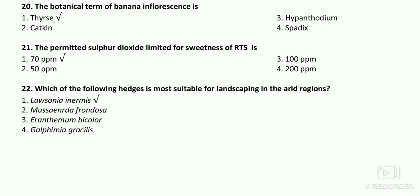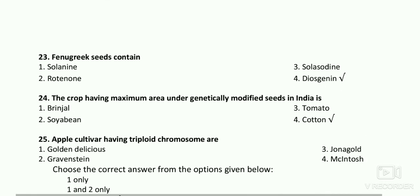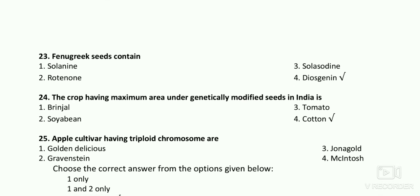Which of the following hedge is most suitable for landscape in the arid region? The answer is Lawsonia inermis. Fenugreek seeds contain diosgenin, which is mostly used for development of contraceptive pills.